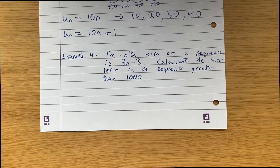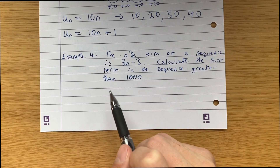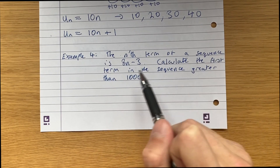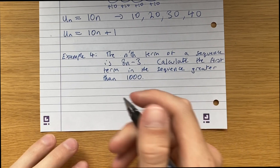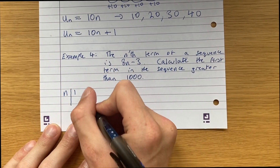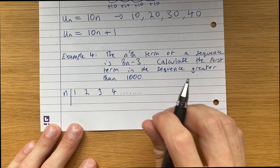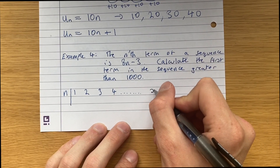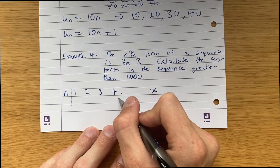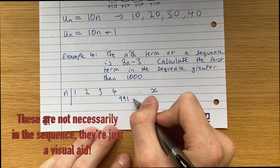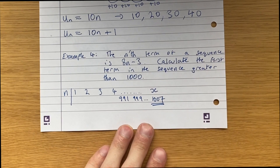The last example in this video is a little more tricky — the kind of question you sometimes get in an exam. We're given that the nth term of a sequence is 8n minus 3, and we're asked to calculate the first term in the sequence greater than 1,000. So n refers to which term it is — first term, second term, third term, and so on. We're asked to find what term x is the first number that exceeds 1,000 — so the sequence might be approaching something like 991, 999, and then the next term would be the first to exceed 1,000.